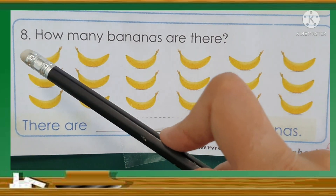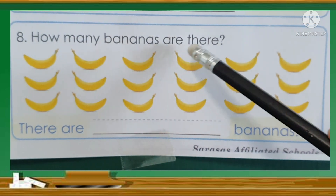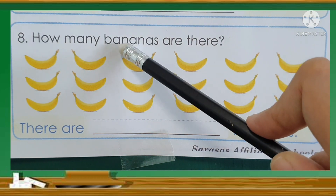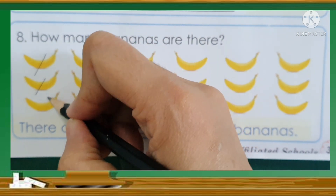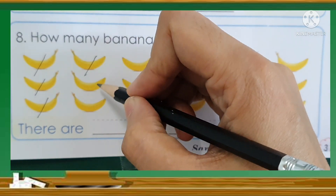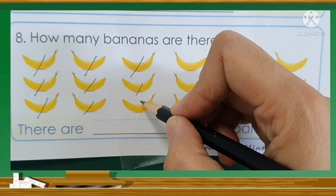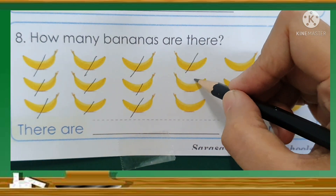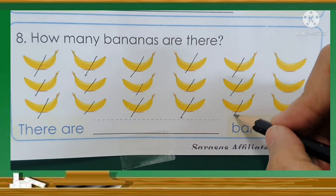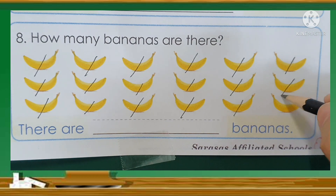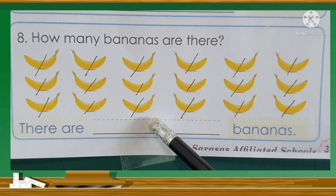Let's go to number 8: How many bananas are there? Now let's count. 1, 2, 3, 4, 5, 6, 7, 8, 9, 10, 11, 12, 13, 14, 15, 16, 17, 18. There are 18 bananas.